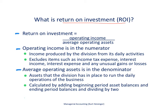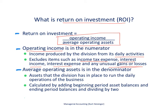Return on investment — the formula is: return on investment equals operating income divided by average operating assets. Operating income is in the numerator, and it includes income produced by the division from its daily operating activities — the income from day-to-day operations, not unusual items like a gain on an investment in some other company. It often excludes items such as income tax expense, interest income, interest expense, and any other unusual gains or losses. We just want to include items that come from daily operations.